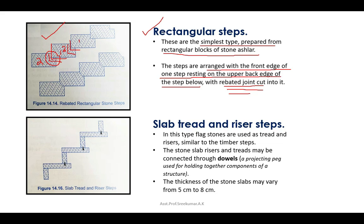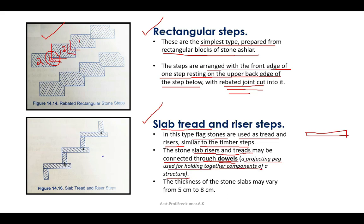The second type is slab tread and riser steps. In this type, flat stones are used as treads and risers, similar to timber steps. The stone slab risers and treads may be connected through dowels — projecting pegs used for holding together components of a structure. The thickness of stone slabs may vary from 5 cm to 8 cm.